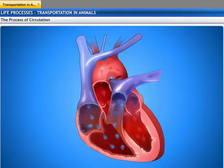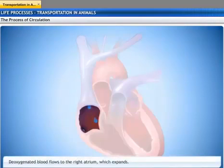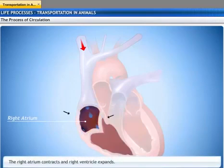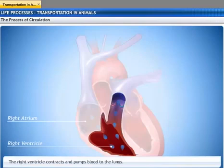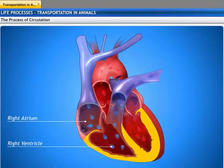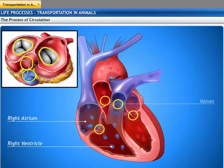Let's take a look at how the heart works in detail. Deoxygenated blood flows from the body to the right atrium of the heart, which expands to collect blood. The right atrium then contracts, and at the same time the right ventricle dilates, transferring blood to the right ventricle. The right ventricle in turn contracts and pumps the blood to the lungs for oxygenation. Since ventricles have to pump blood into various organs, their walls are thicker and more muscular than those of the atria. Valves present in the ventricles and atria ensure that blood does not flow backwards during contraction or expansion.